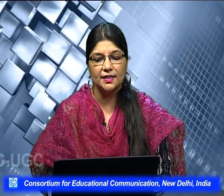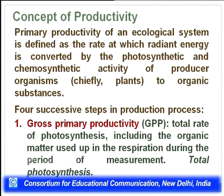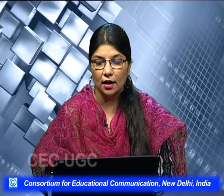There are four successive steps in the production process. The first is gross primary productivity (GPP): the total rate of photosynthesis including the organic matter used up in respiration during the period of measurement — it is basically the total photosynthesis. When plants photosynthesize food they also respire, using some energy for their own maintenance. If we consider this total energy, it is termed gross primary productivity.